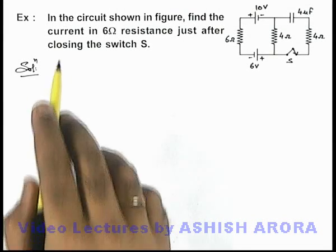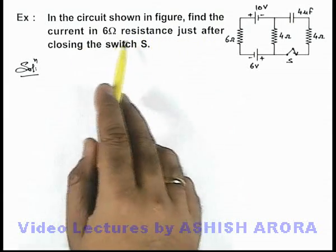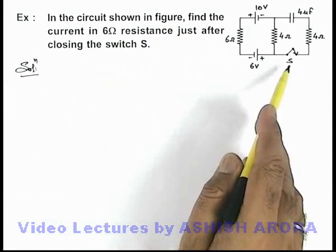In this example, in the circuit shown in the figure, we are required to find the current in the 6-ohm resistance just after closing switch S.